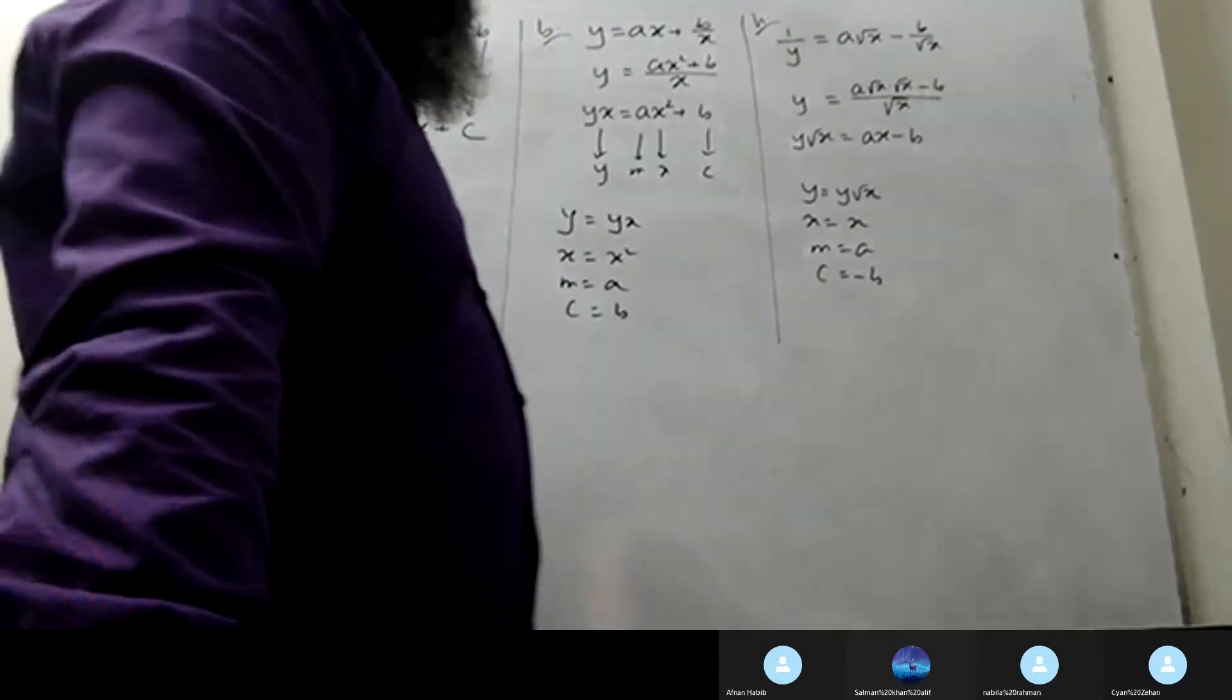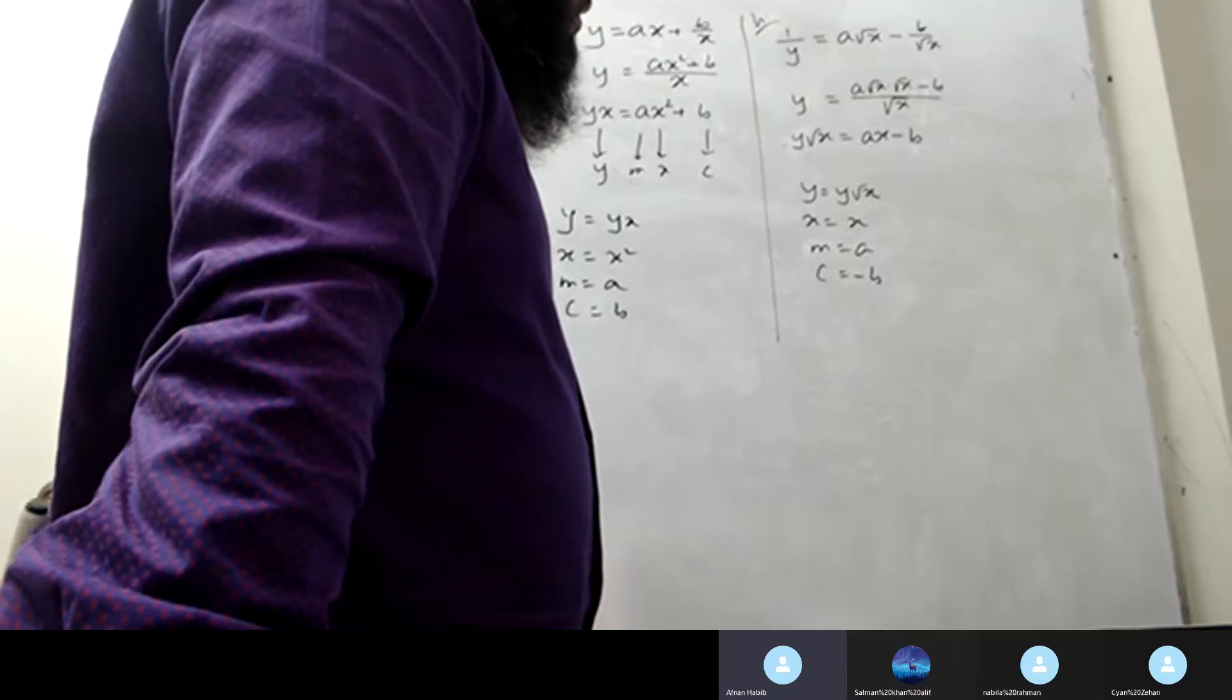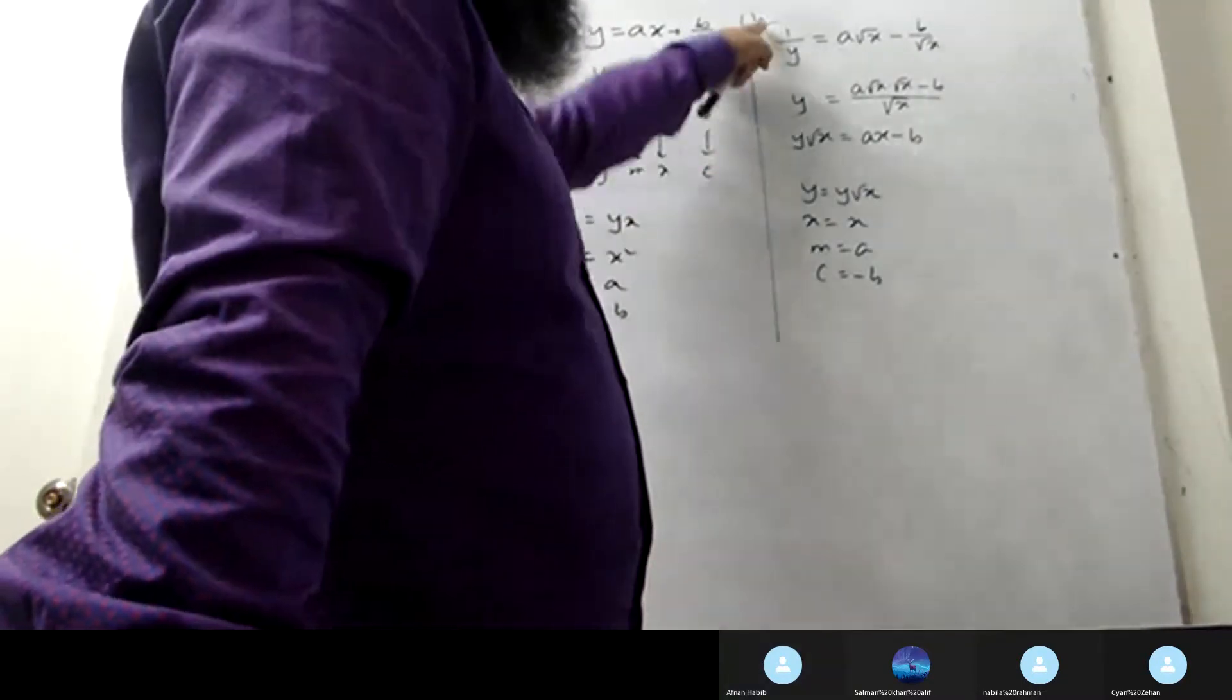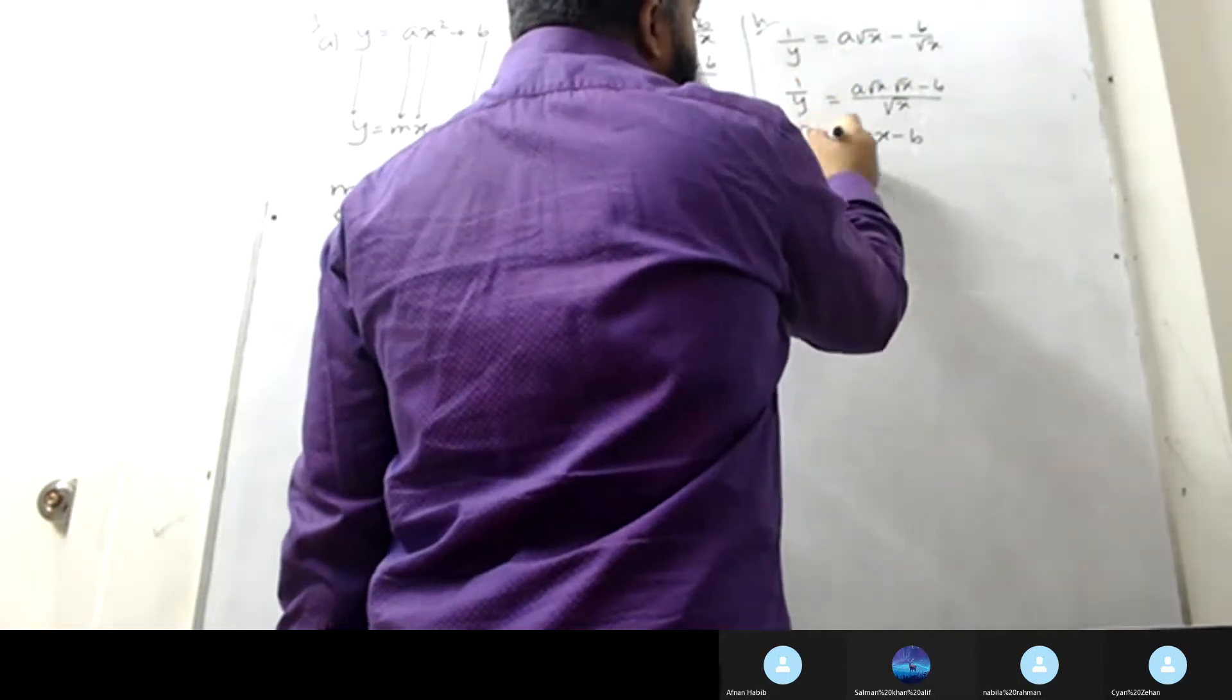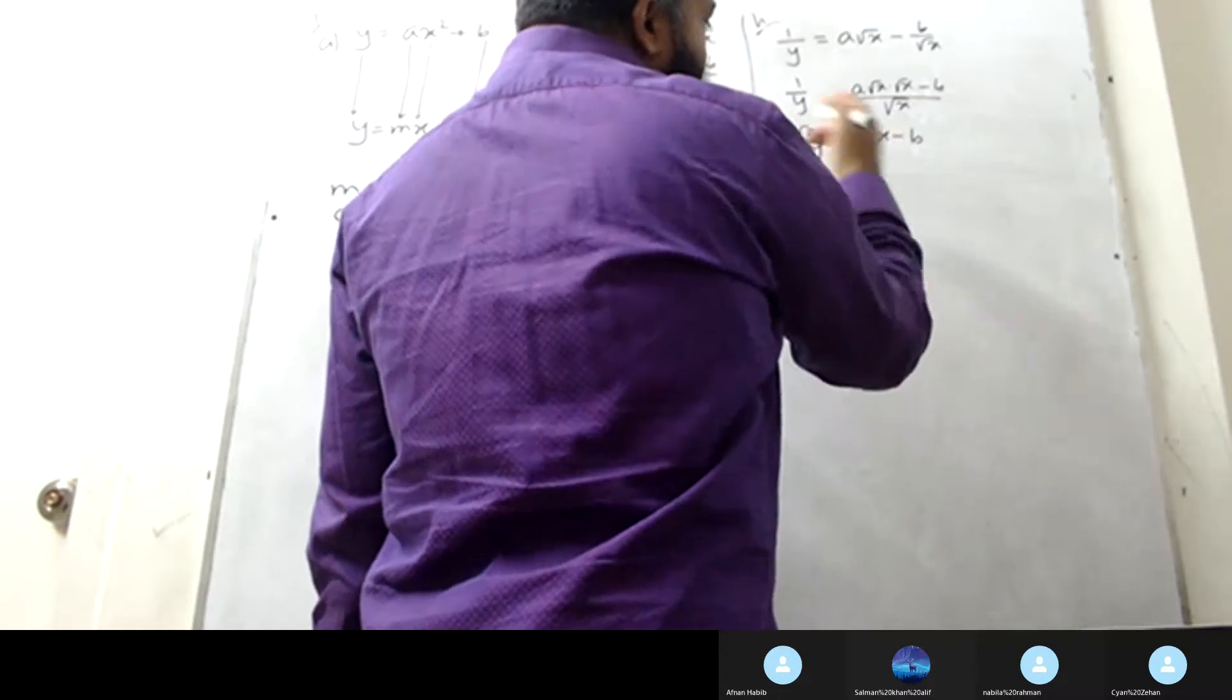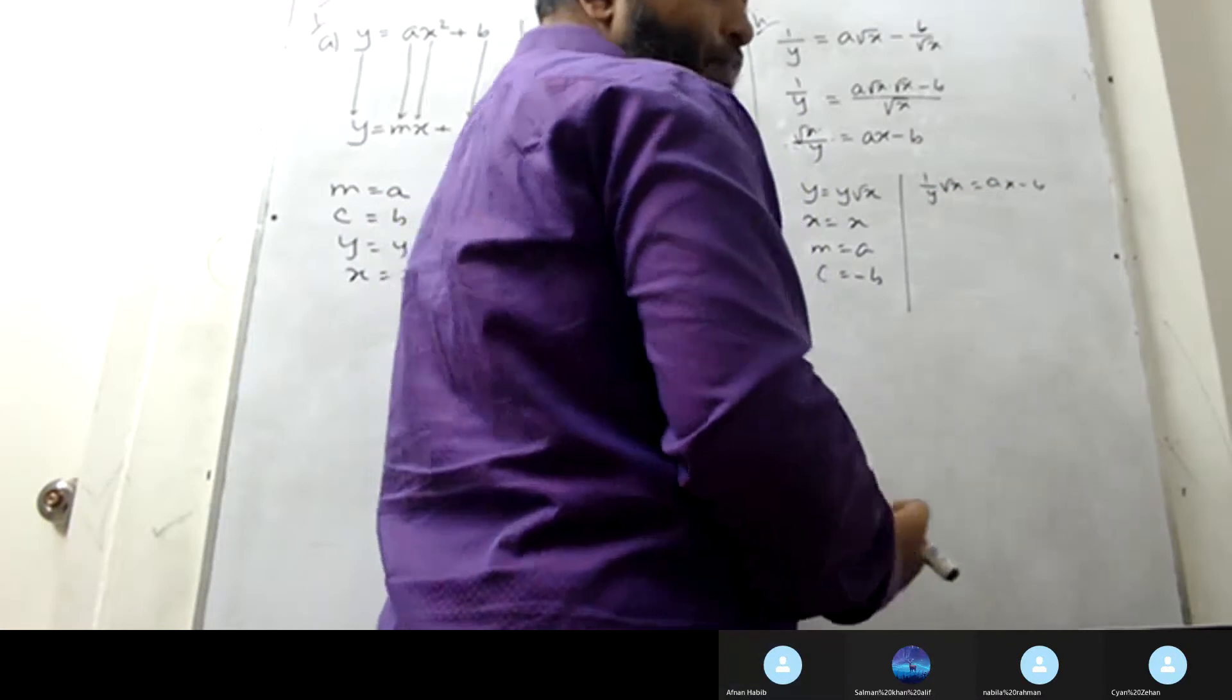Student asks: The equation is different - is it 1/y equals a root x? Teacher clarifies: Yes, it's one by y. If you cross multiply, it's root over x divided by y, which gives one by y times root over x equals ax minus b.